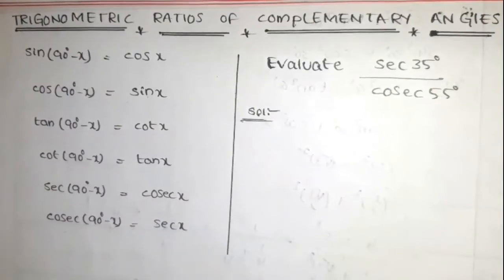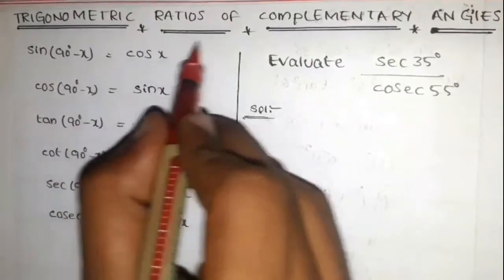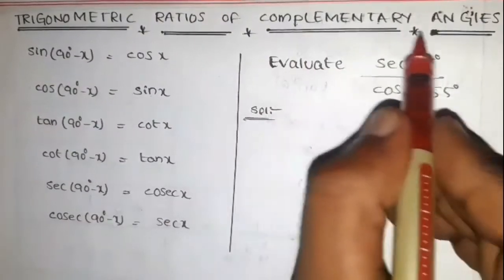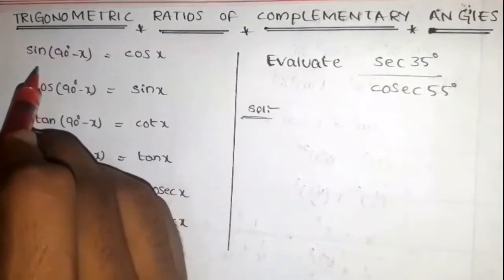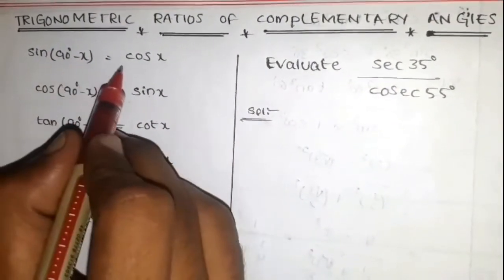What is a complementary angle? If the sum of two angles is equal to 90 degrees, then the angles are said to be complementary angles. Let us have a look at the trigonometric ratios of complementary angles. Sin(90° - x) = cos x.